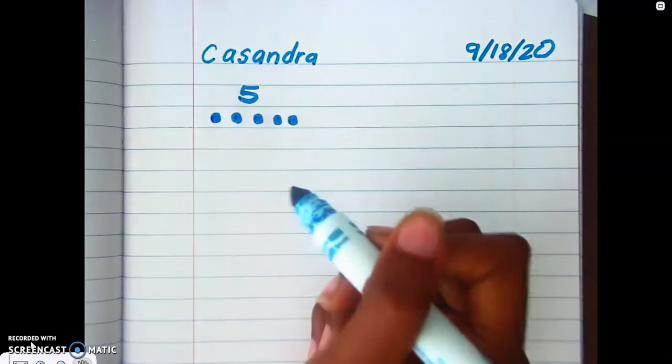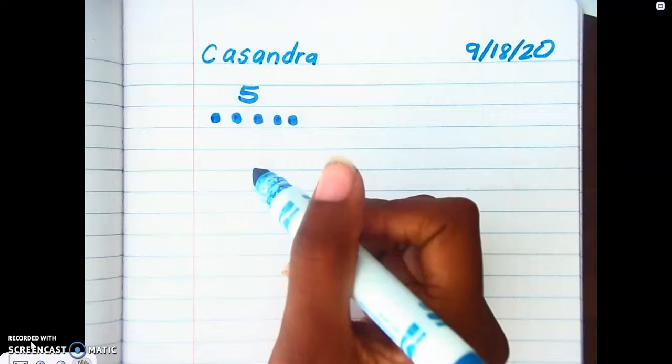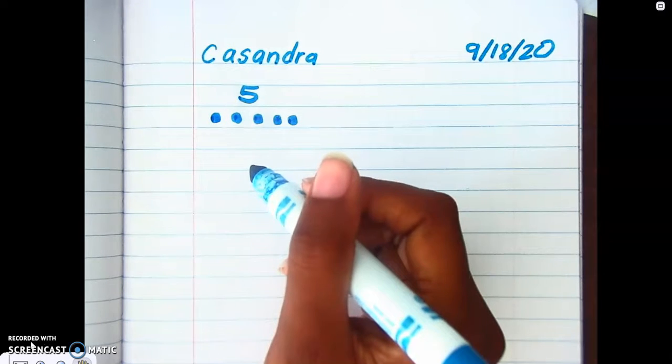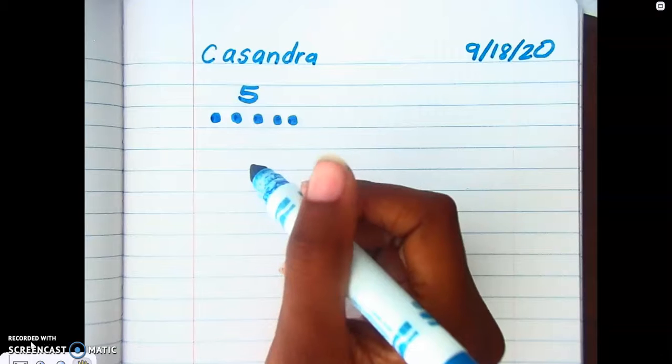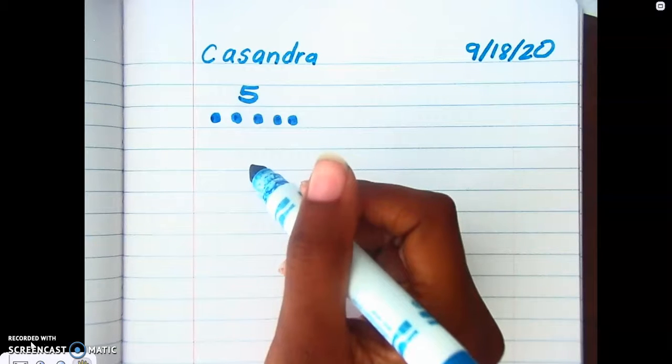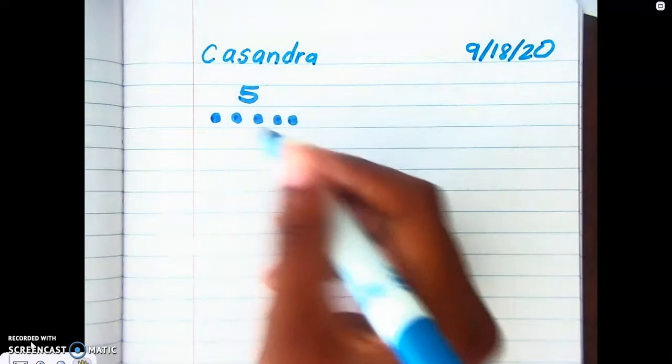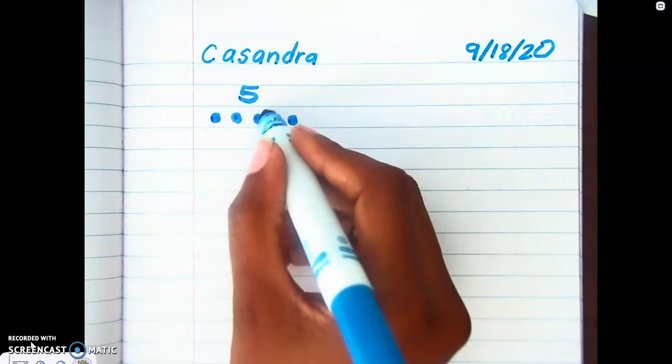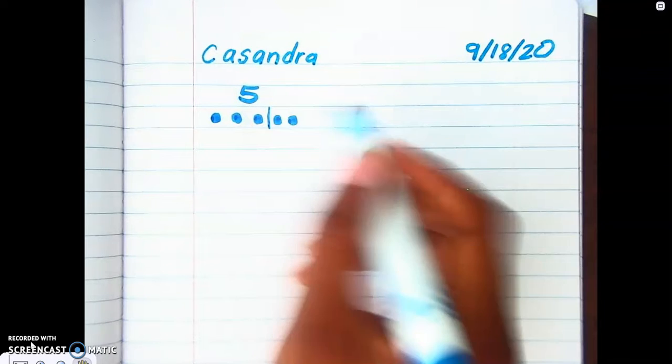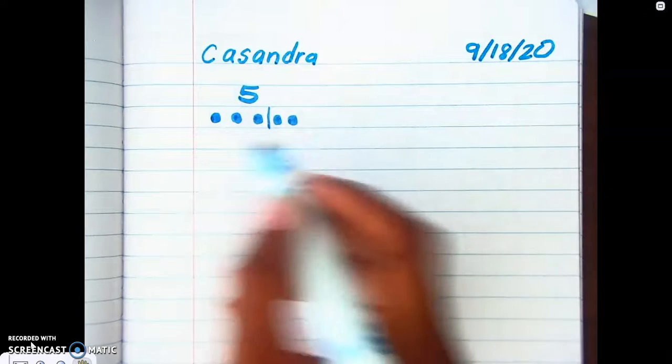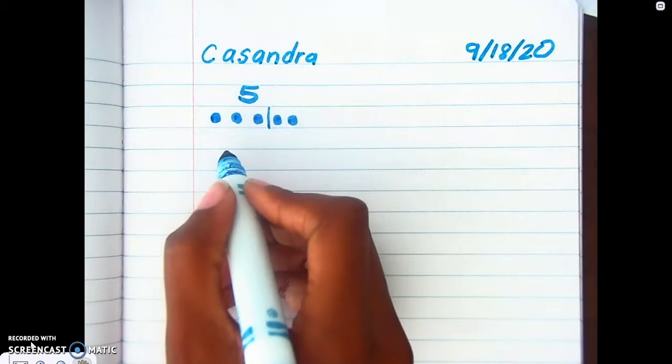Okay, so since this is my whole, this is the number that I picked, the next thing I want you to do is to draw a line to break it into two parts. Don't copy what I'm doing right now, I'm just showing you what you're gonna do when it's your turn. So, hmm, where do I want to draw my line? I think I'm gonna draw it here. Okay, now when you do that, you're gonna make a fact family using the information that you have.